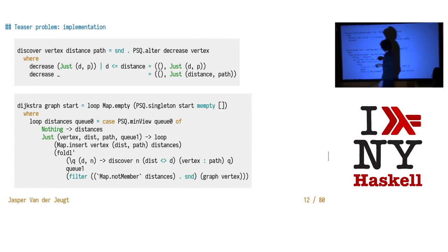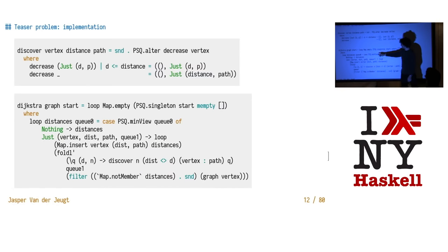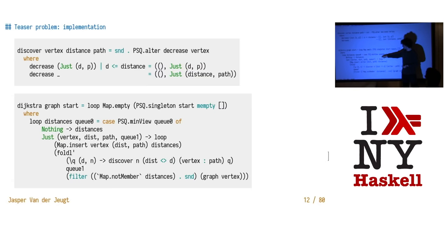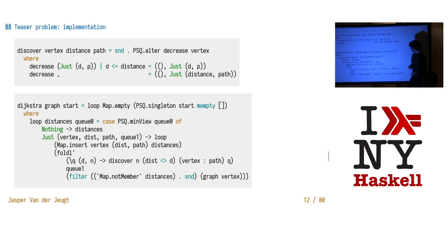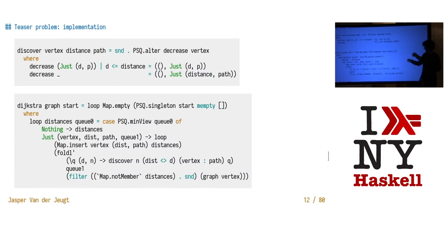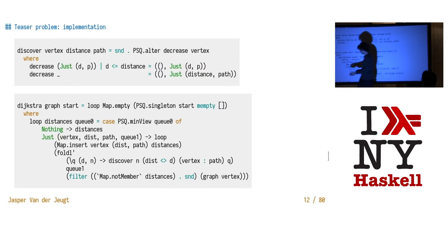Then we have the implementation of Dijkstra on one slide. We write a little loop function with an accumulator where we keep all the distances of the things we're visiting. We start out with a queue where we only have one place we want to visit. We pop something off our queue — min view is how you pop something. If there's nothing in the queue anymore, we're done. Otherwise we take the thing from the queue: there's a vertex, a distance, how you got there, and then the remainder of the queue. We update the map, then look at all the neighbors of this vertex, filtering out the ones we've already visited. For every neighbor, we call the discover function with the updated distance and the path which now includes this vertex. And that's basically it — a very simple but very good implementation of Dijkstra using this library.